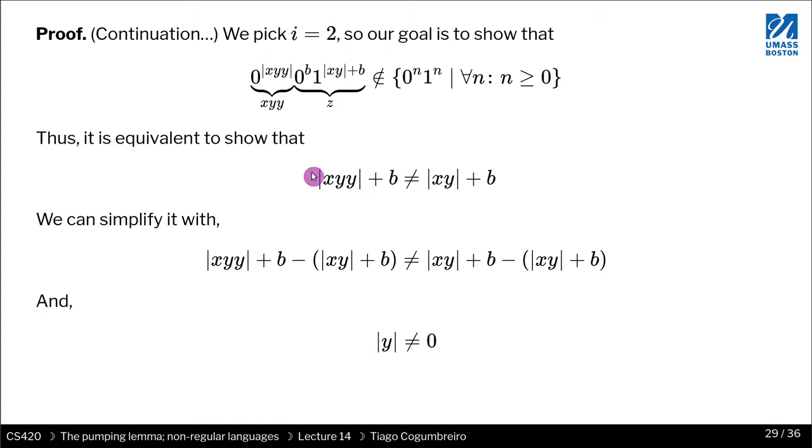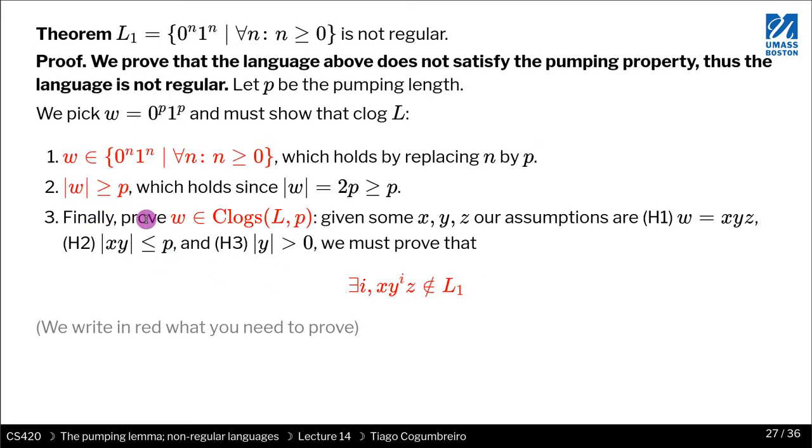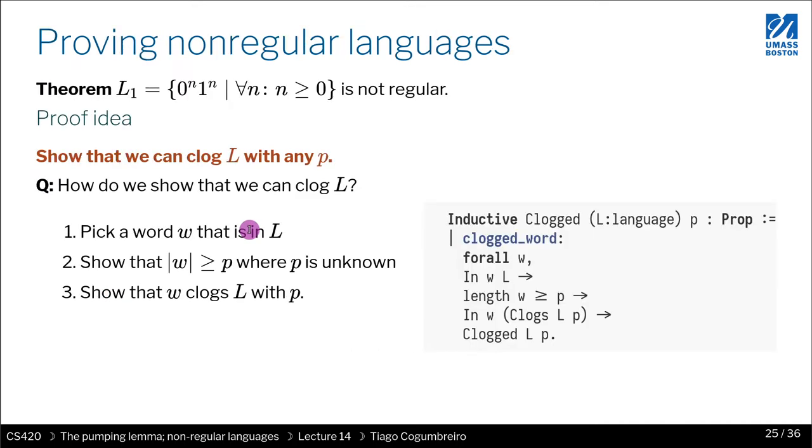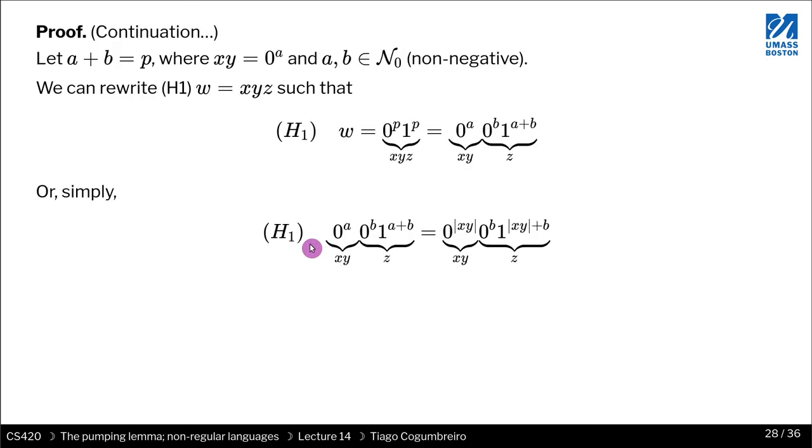So now what we do is we just simplify the expression, and we subtract x, y plus B on both sides, and what we get in the end is just that the length of y must be different than zero. And that, as we looked before, is one of the assumptions. One of the assumptions is that the length of y has to be different than zero. Ah, here it is, h3. The length of y has to be greater than zero, so it's different than zero.